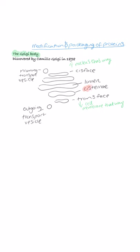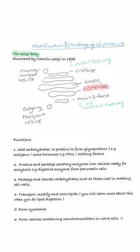So let's talk through each of the potential functions of the Golgi body in turn. Number one, they can modify proteins by adding carbohydrates to form glycoproteins, for instance, antigens, or some hormones like HCG, human chorionic gonadotropin, which is the hormone that is secreted by the growing placenta when a woman gets pregnant.